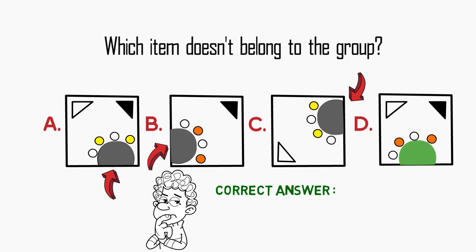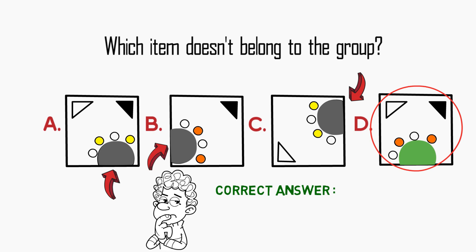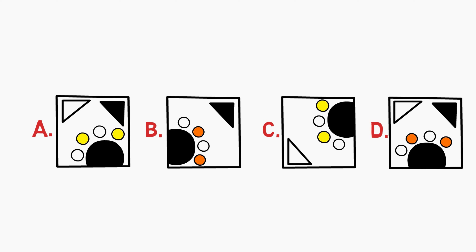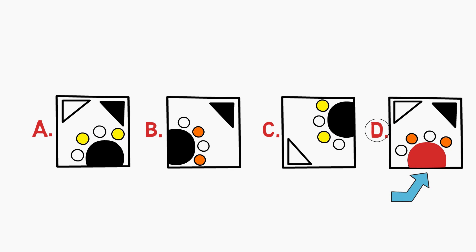You see this in shapes A, B, and C, but in shape D the half-circle is placed in a different location — it is in the bottom middle of the square. This is why the item that doesn't belong to the group is choice D. To recap: the pattern is that all half-circles are attached to the corners of the square, but in shape D the half-circle is in the lower part, so the correct answer is choice D.